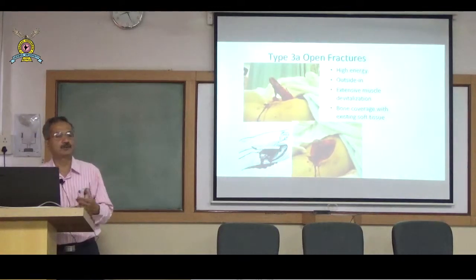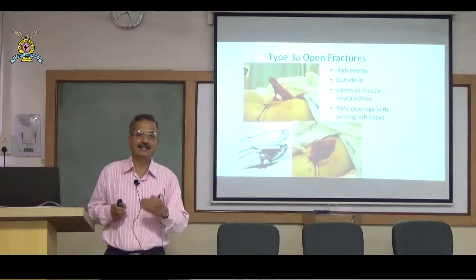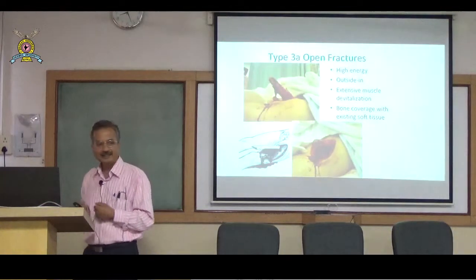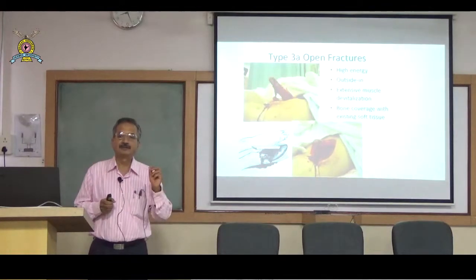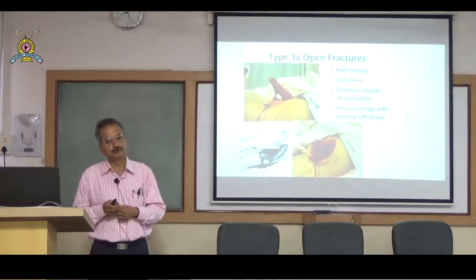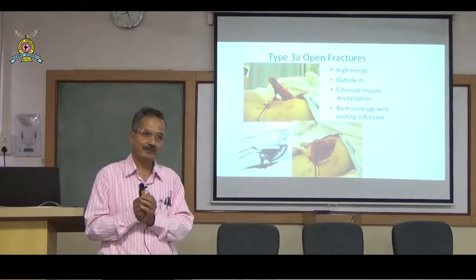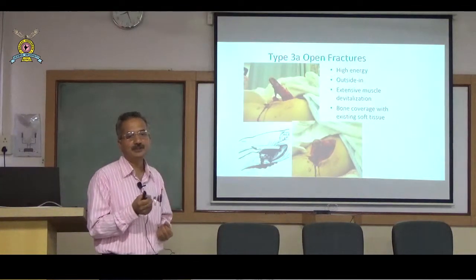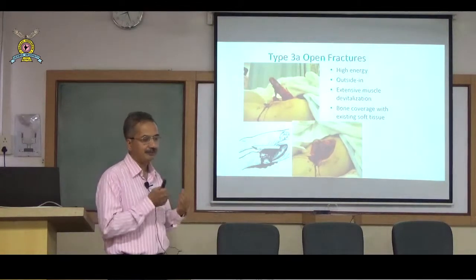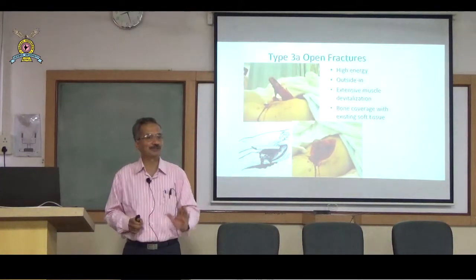Type III open fractures are now subclassified into A, B, and C based on severity of soft tissue and bony injury. Type IIIA: high-velocity injury with significant stripping of periosteum and crushing of muscle and subcutaneous tissue, but the bone can still be covered with muscle or subcutaneous tissue. The fracture may be comminuted.